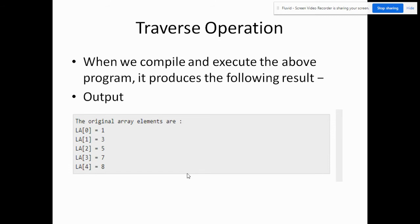When we compile and execute the above program, it produces the following result. The output will be the original array elements are, then the following output. How did we arrive at that output? We'll be explaining that later.